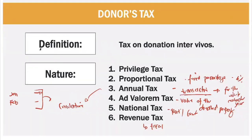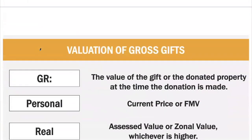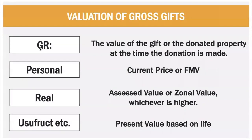Since we are done with the introduction of what is a donation and what is donor's tax, we go now to donor's tax per se — the taxation. We tax your donation based on your gross gifts. One thing we need to look at is the value, because donor's tax is ad valorem. So first we need to learn what is the value of that particular donated property. The general rule on valuation of gross gifts: the value of the gift or donated property at the time the donation is made. In estate tax it is at the time of death; here it is at the time the donation is made.